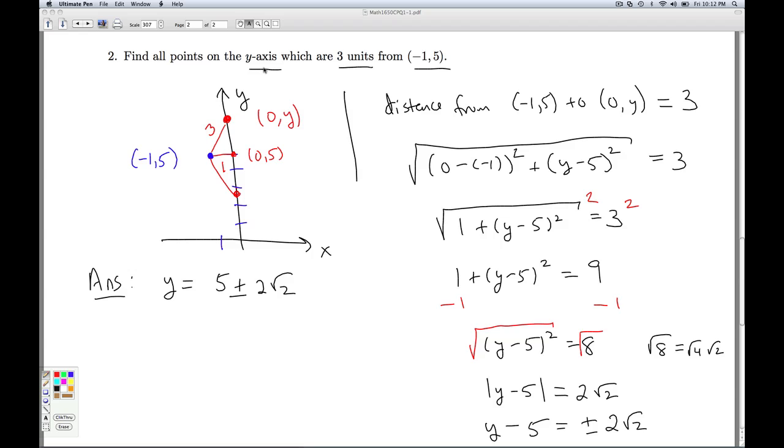So what are the points on the y-axis which are 3 units from (-1, 5)? The points on the y-axis, they've got an x coordinate of 0. And the y coordinates are 5 ± 2√2.